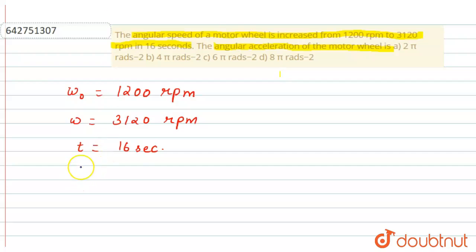Which is v equals u plus at. This is linear motion. If we want to write in angular or circular motion, that will be omega equals omega naught plus alpha t.